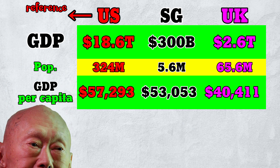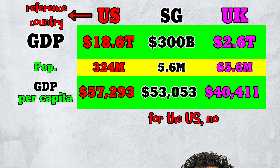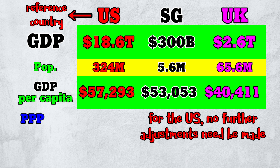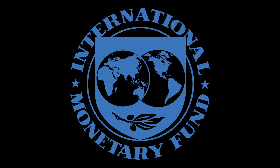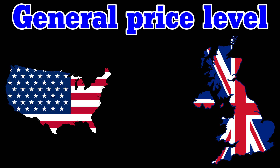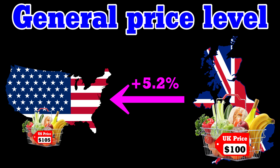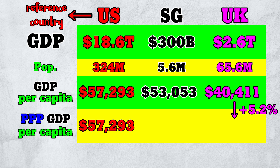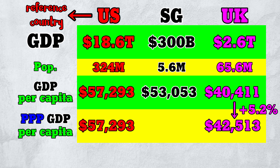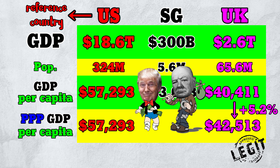By custom, the US is the reference country, meaning no further adjustments are needed for the US — PPP GDP per capita simply equals GDP per capita. According to the IMF, the general price level in the US, compared to the UK, is about 5% higher. In other words, stuff is generally 5% more expensive in the US than in the UK. So for the UK, we add about 5% to GDP per capita to get PPP GDP per capita of about 43k. Having adjusted for both population and prices, we can now say that the US, compared to the UK, is 35% richer.